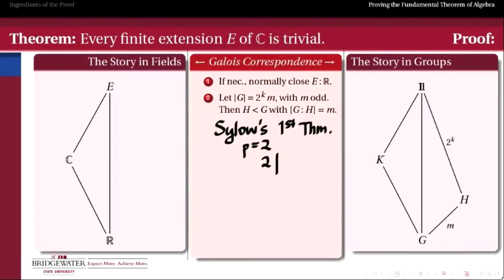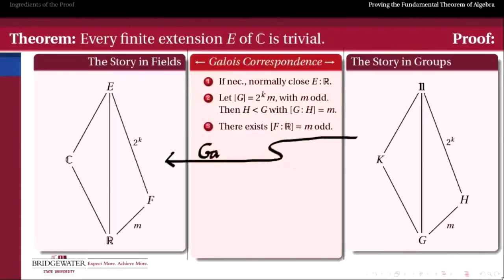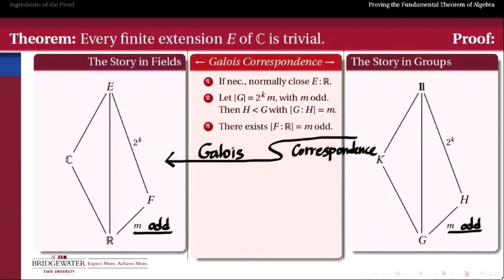Now we apply Sylow's first theorem. The order of G equals 2 to the k times m, where m is odd, so there must exist a maximal 2-subgroup H inside G whose index in G is m and whose order is 2 to the k. We then have a group diagram with H as a subgroup of G with odd index m. Using the Galois correspondence, that index-m subgroup H inside G implies the existence of a degree-m extension of the reals — let's call it F.